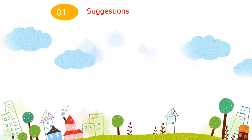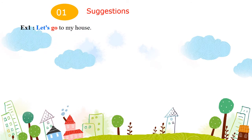Cấu trúc đầu tiên chúng ta học là Suggestion – lời đề nghị. Để đưa ra lời đề nghị hoặc lời gợi ý, ta có thể dùng một trong các cách sau. Ví dụ thứ nhất: "Let's go to my house." – Chúng ta hãy đến nhà tôi. Dùng cấu trúc mệnh lệnh, bắt đầu bằng Let's cộng với động từ nguyên mẫu.